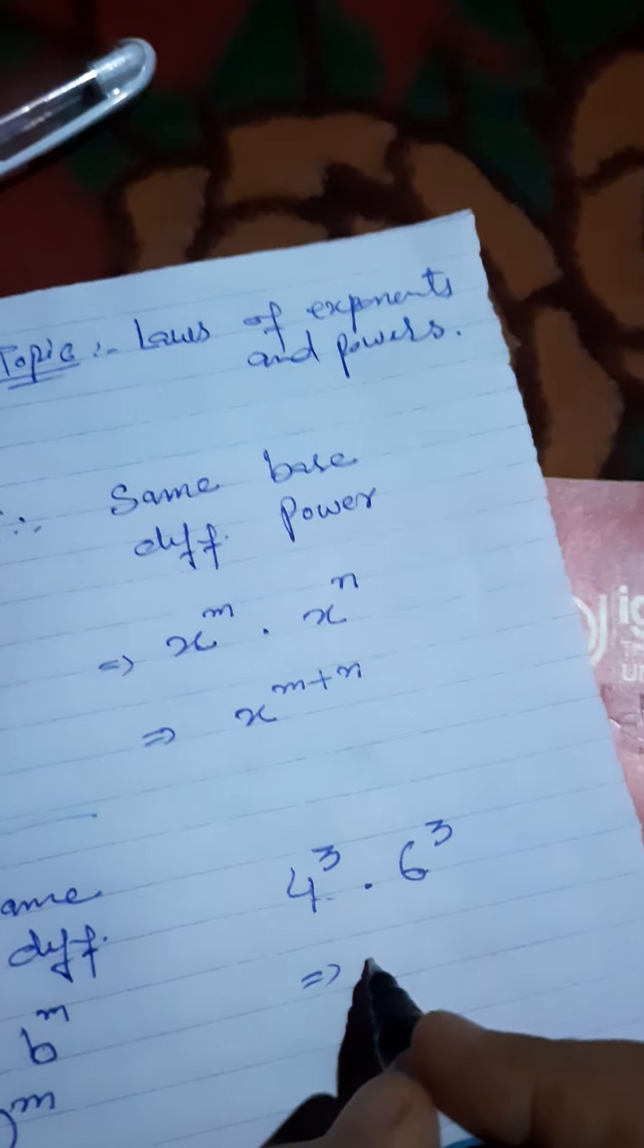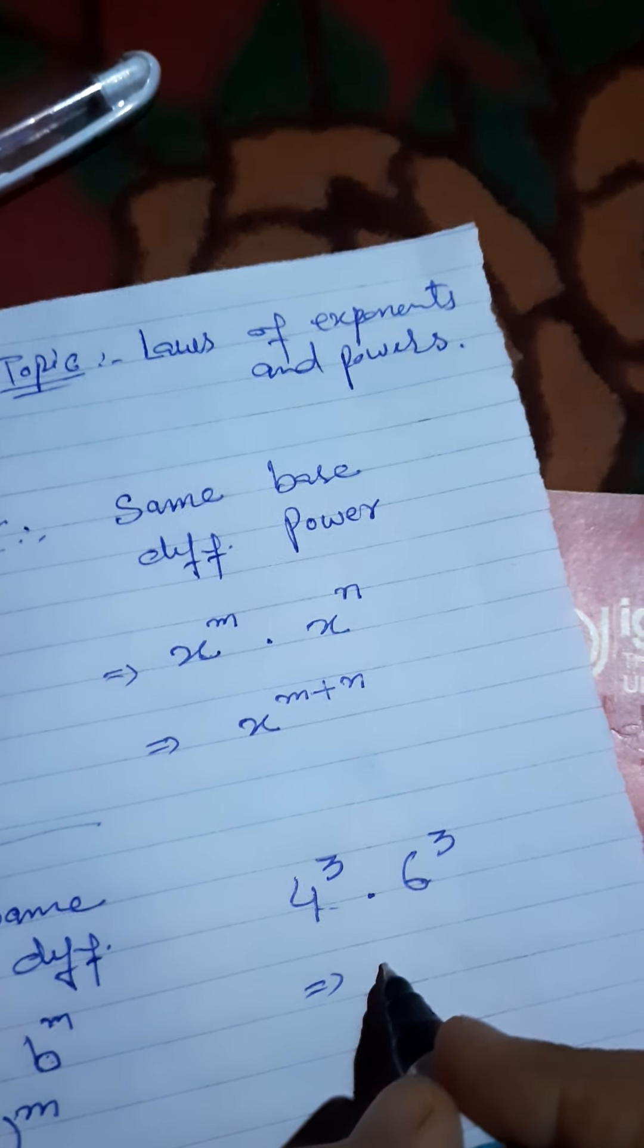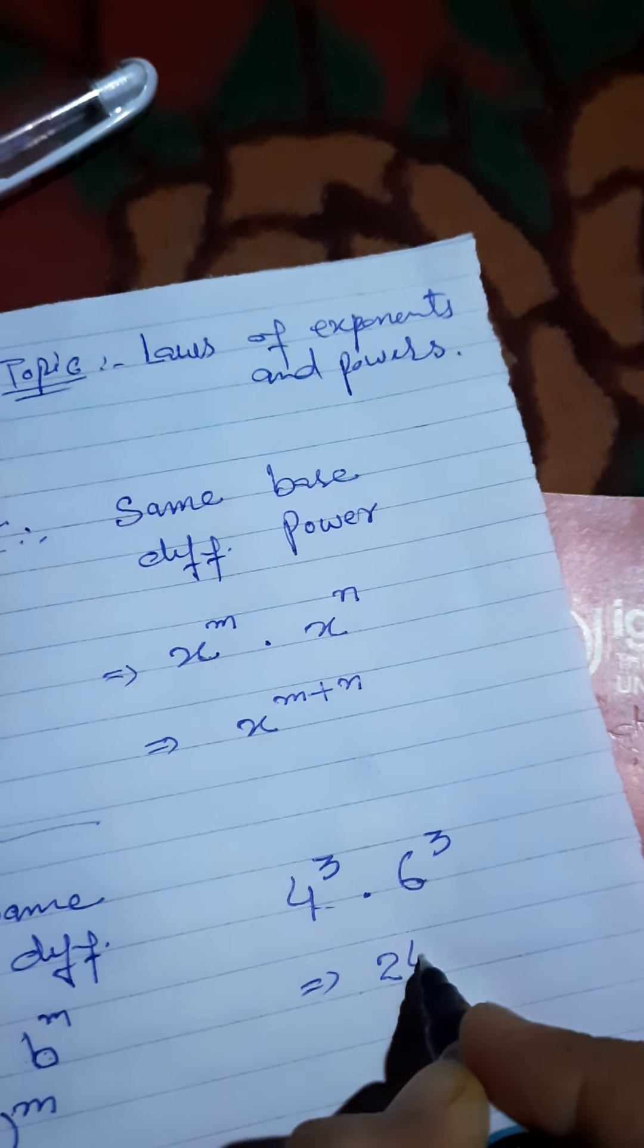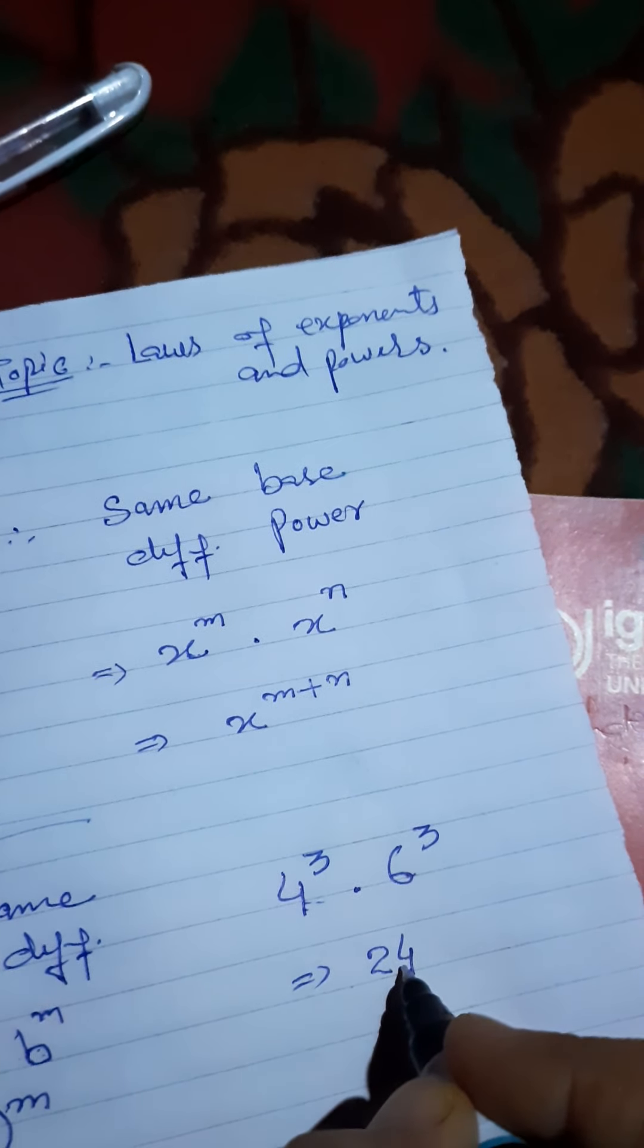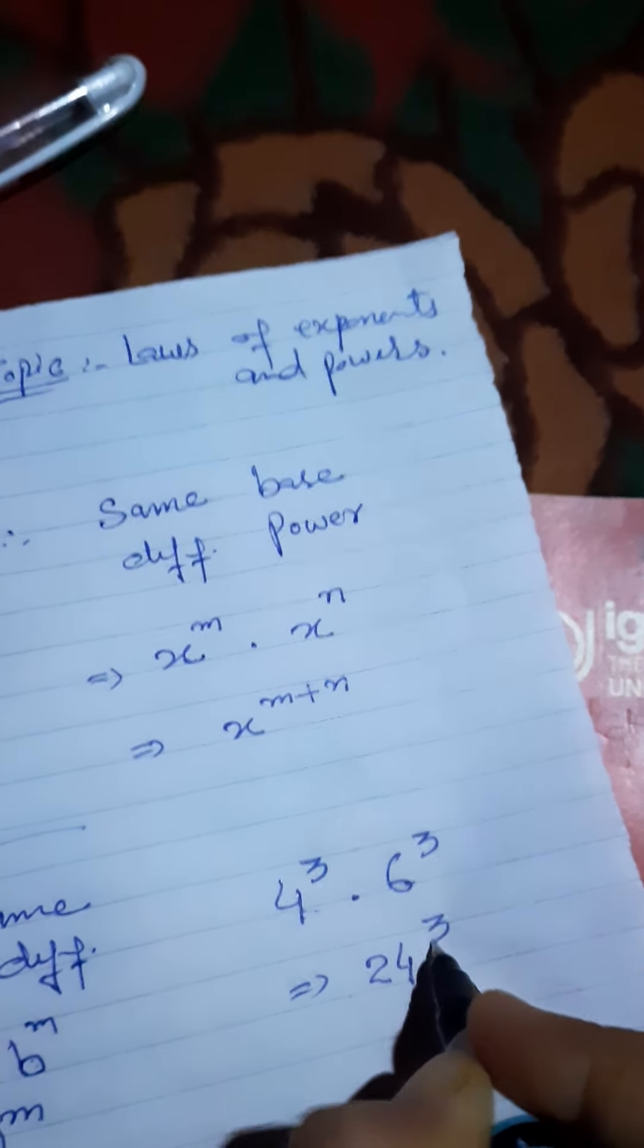4 multiplied by 6 is 24, so we get 24 raised to power 3.